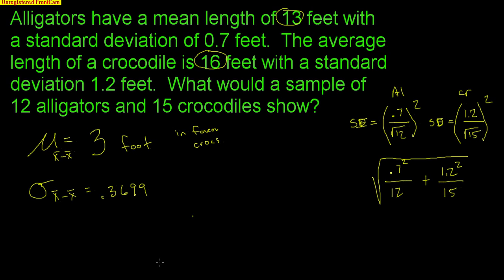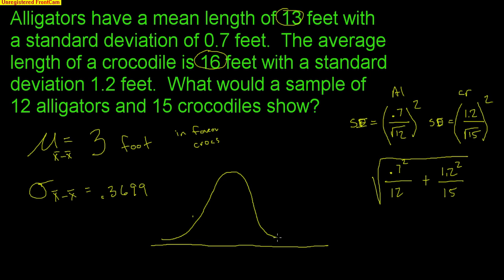If we take many, many samples of alligators and many samples of crocodiles, there's not always going to be a three-foot difference. Sometimes we might get a bigger difference and sometimes a smaller one, but we expect a three-foot difference. The standard deviation in this case is 0.3699, which I'll round to 0.37.